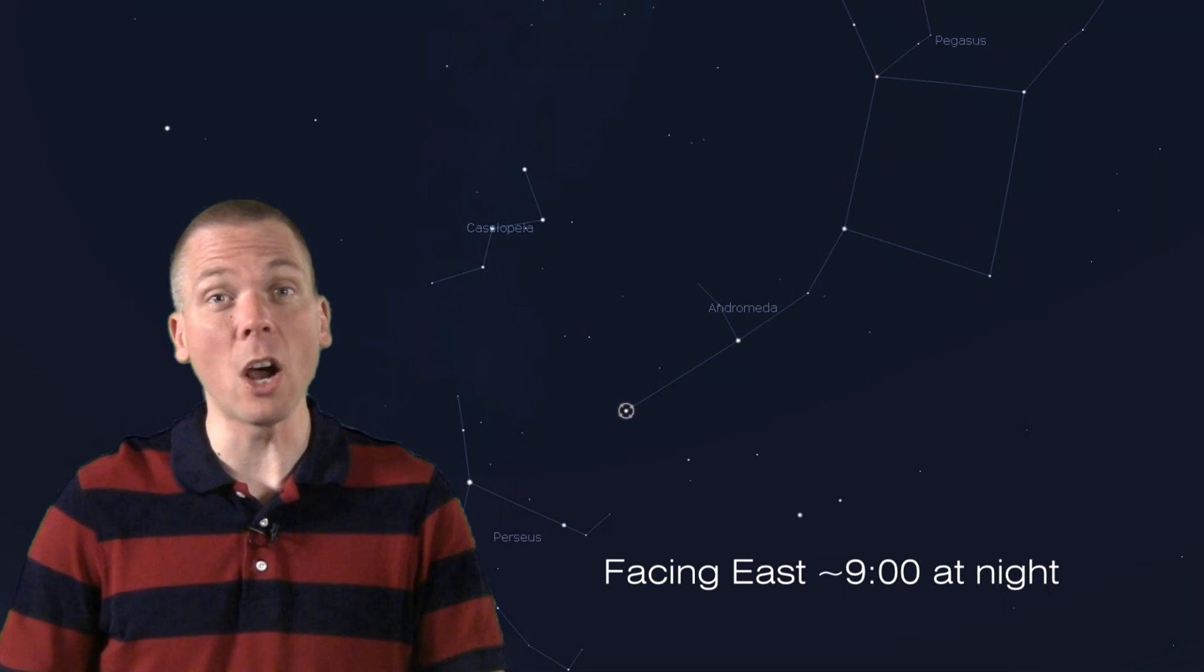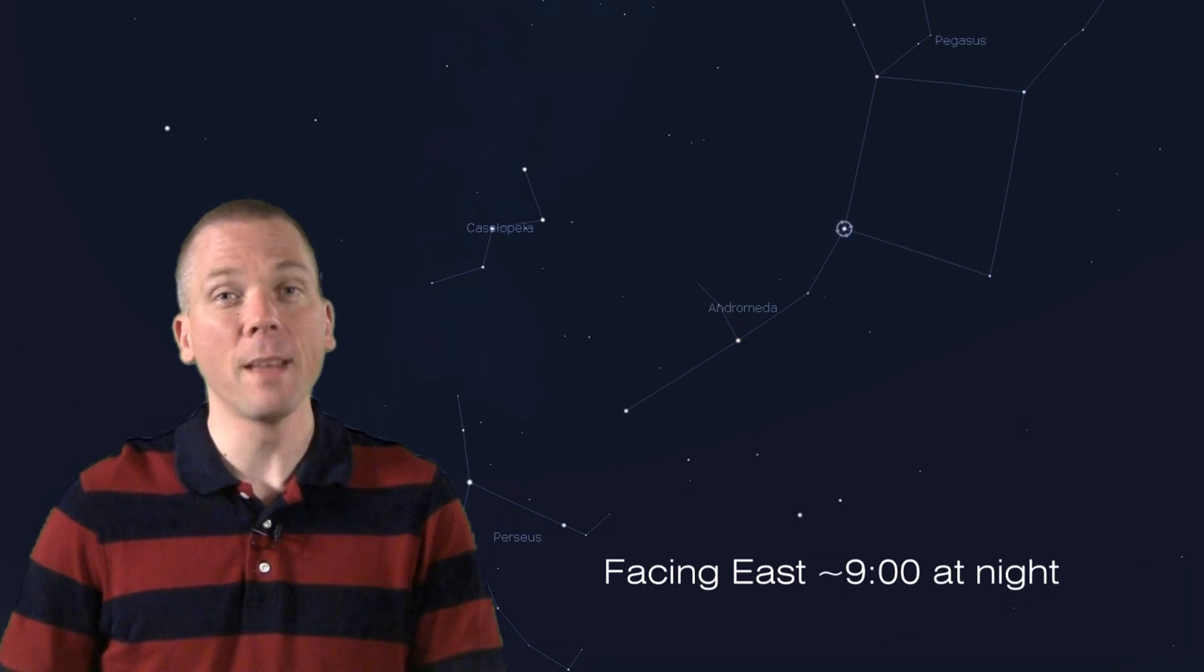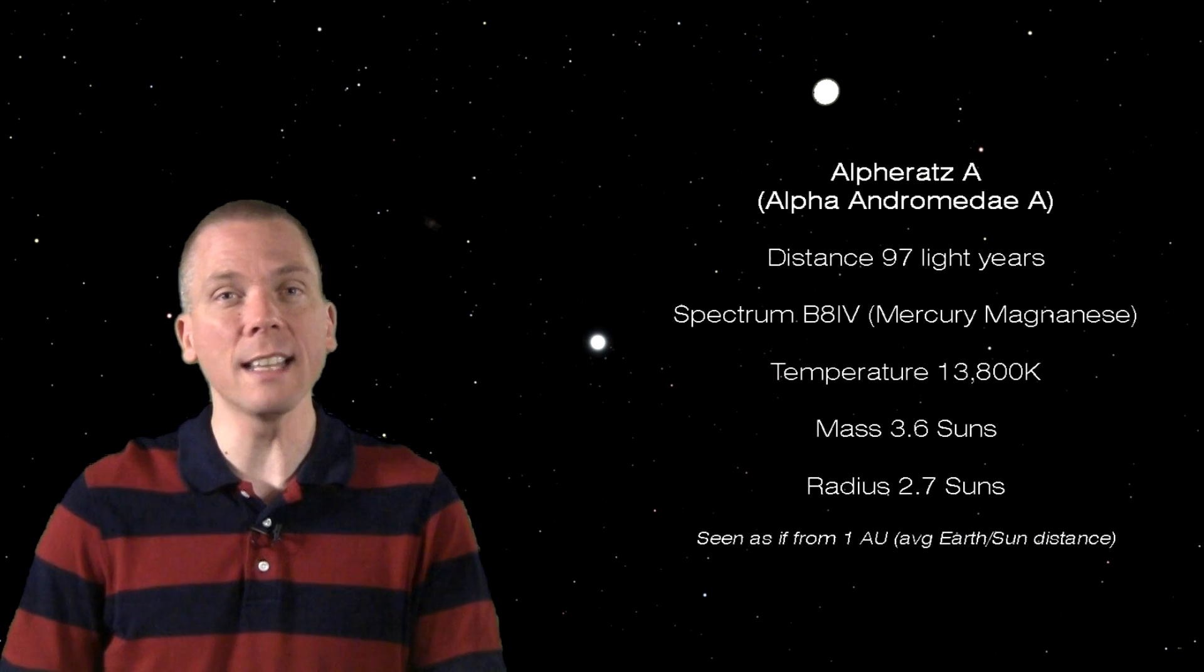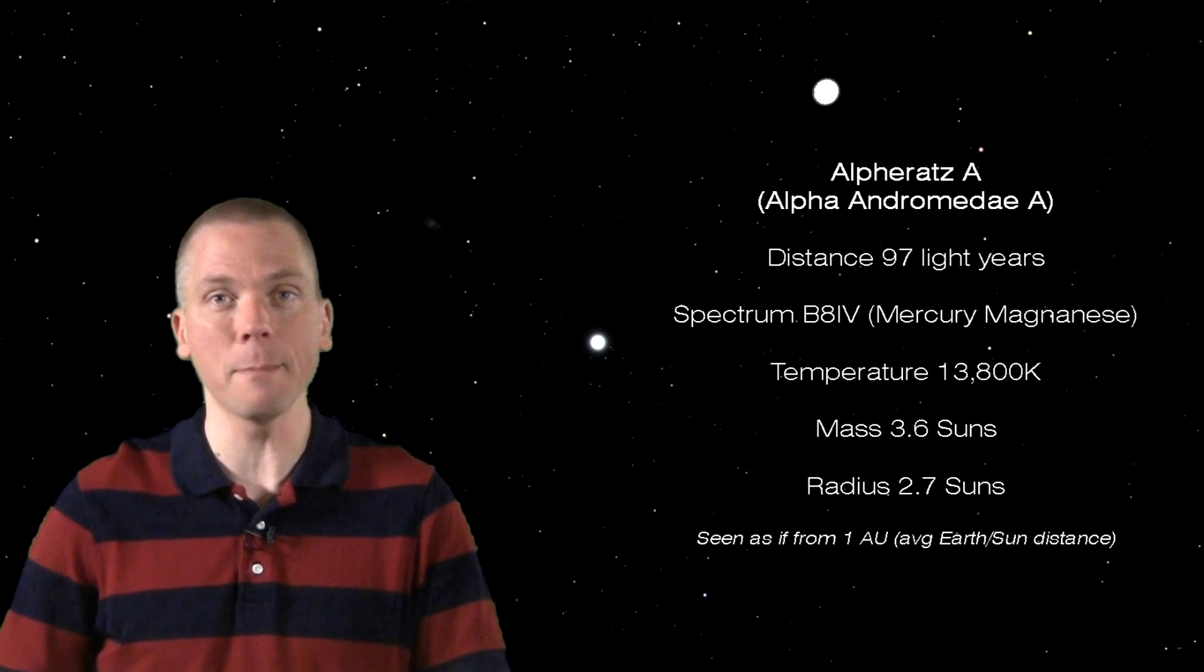These second magnitude suns may all appear similar in brightness to us, but there's quite a bit of difference among the three. Alpharatz is a B-class blue-white star that's almost 100 light years away. This star is hot, at about 13,800 Kelvin.